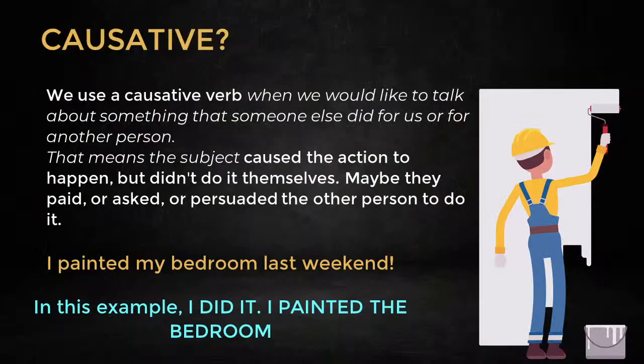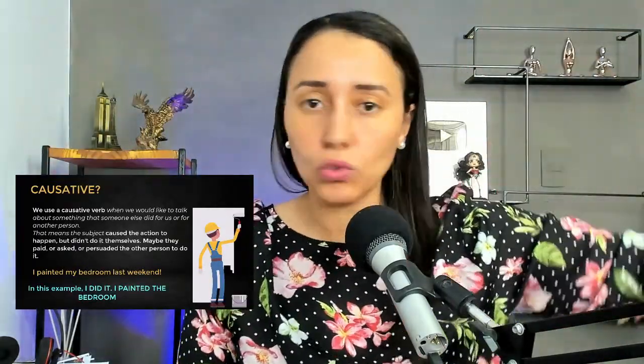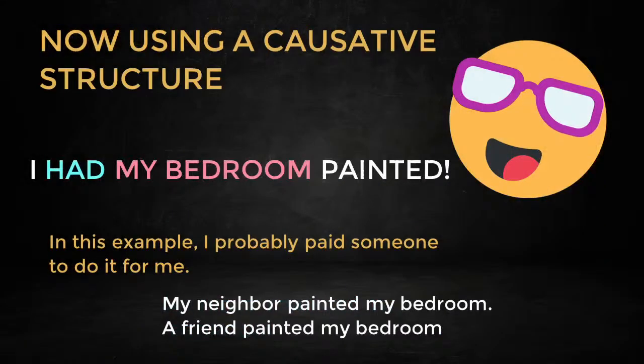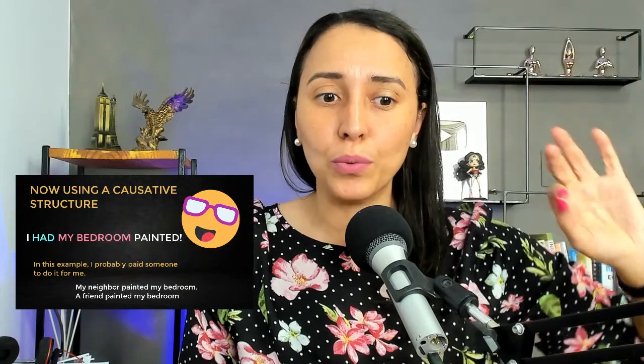Let's look at the normal way to say something like this — a regular phrase. Take a look at the example on the screen: 'I painted my bedroom last weekend — the bedroom walls.' This is a typical example. I did it — I painted the walls, I got the paint and paint brushes, and I painted the walls in my bedroom. This is regular. But when I am using the causative structure, pay attention to the difference: 'I had my bedroom painted.'